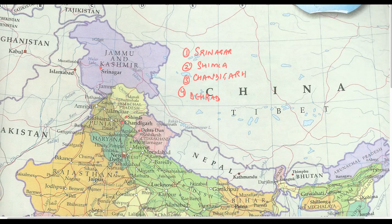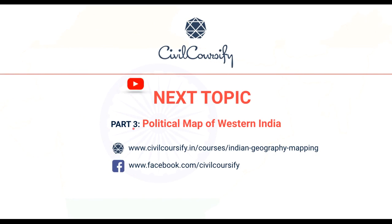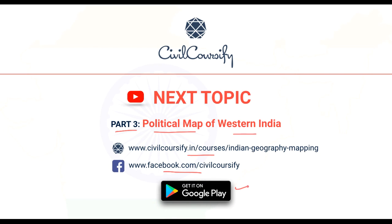We should be ready for such questions and observe the maps very carefully with a lot of detail. Look for corners in the maps, because that is where UPSC will definitely ask questions — places where people generally tend to forget. This is it for this video. In the next video we'll discuss part 3, the political map of Western India. Follow us on Facebook, download the CivilCoursify Android app, and thank you — have a nice day!